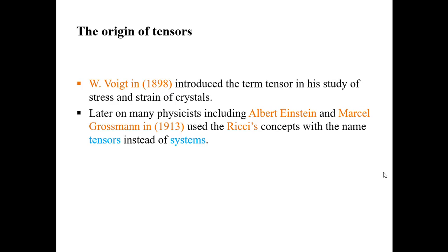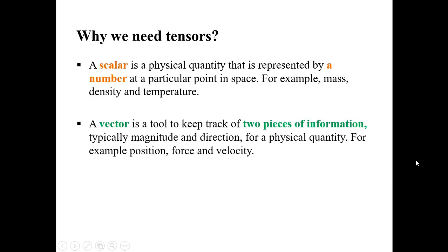Later on, many physicists including Albert Einstein and Marcel Grossman in 1913 used the Ricci's concept with the name tensors instead of systems. Albert Einstein and Marcel Grossman introduced the term tensors in physics and mathematics. This was a brief historical track of the word tensor in mathematics.